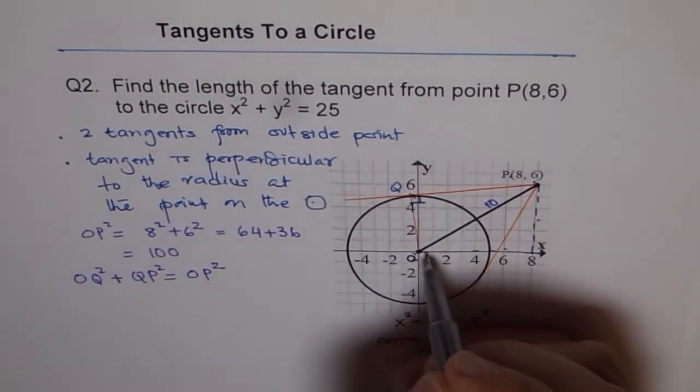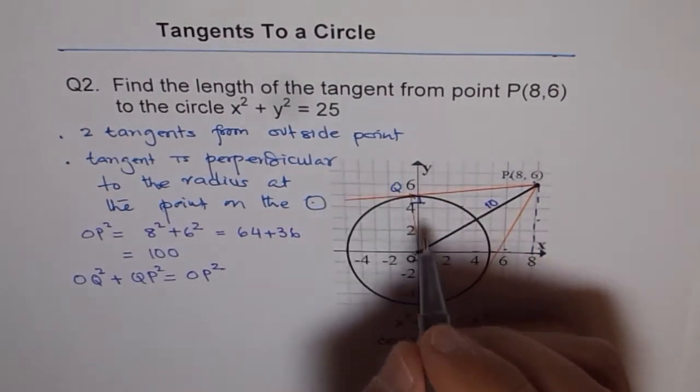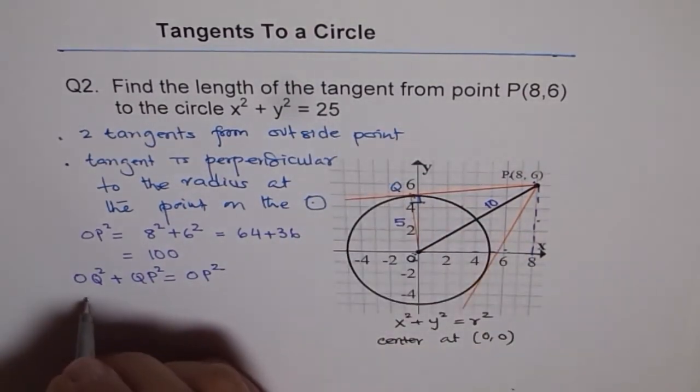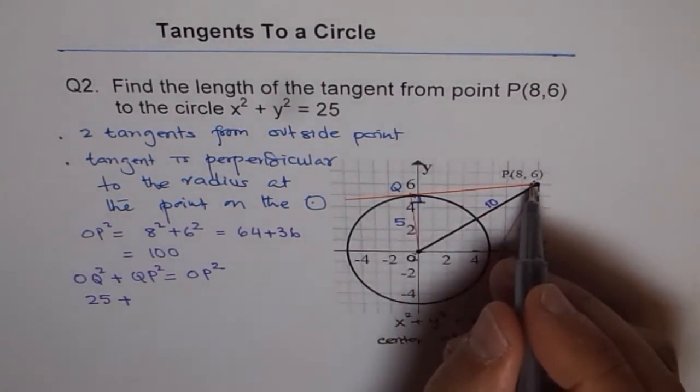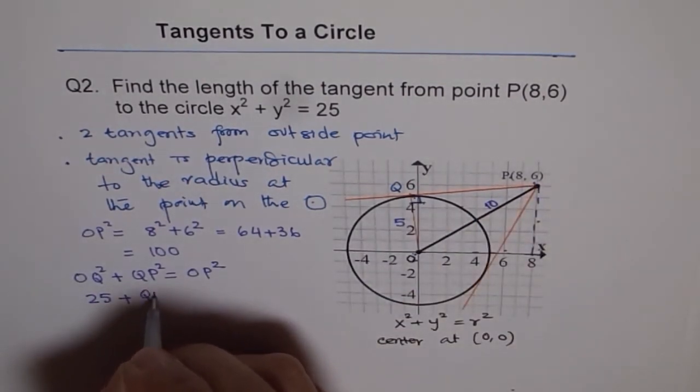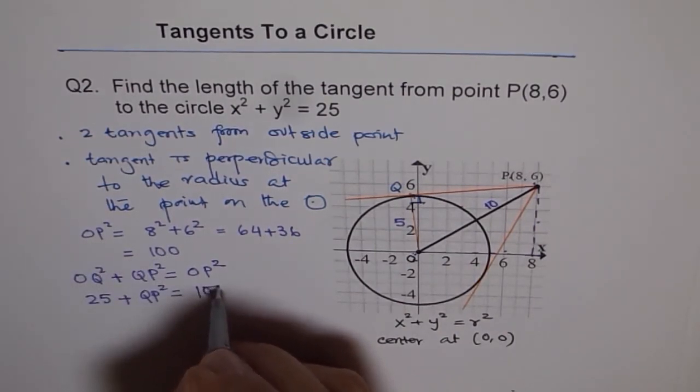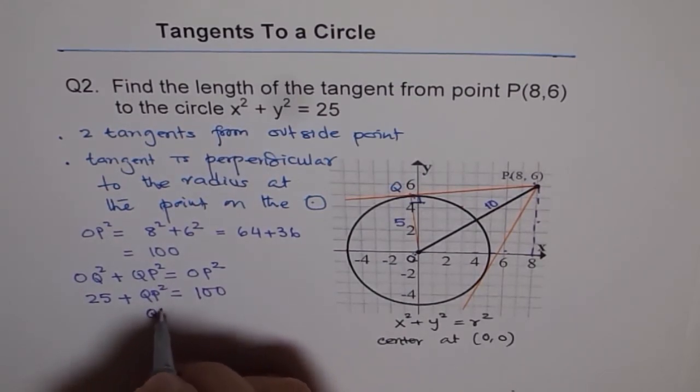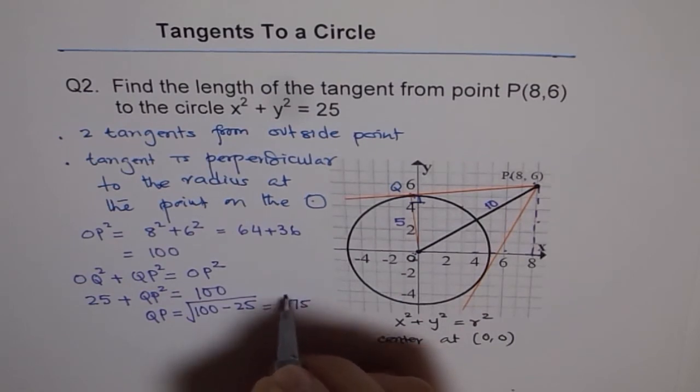Now, OQ is the radius of the circle. OQ is 5, radius is 5, so radius² is 25. So OQ² is 25. So we get 25 + QP² equals OP², which we found to be 100. From here, we can rearrange and find QP² = 100 - 25, which is √75.